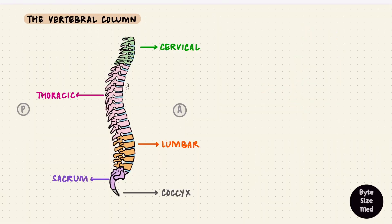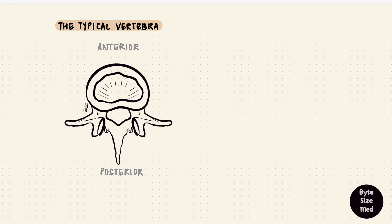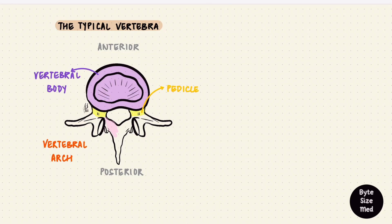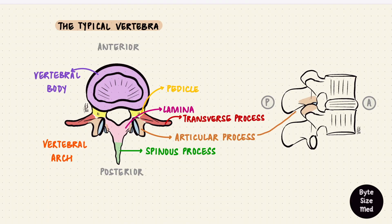All these vertebrae have differences in their appearances, and I've covered some of the different features in earlier parts of this series. Now for a quick recap of the parts of a typical vertebra. Looking at it from above — anterior at the front, posterior at the back — it has a vertebral body anteriorly and a vertebral arch posteriorly. In between the two is a vertebral foramen. The arch and body are united by pedicles, from which emerge two laminae. At the junction of those two laminae is the spinous process. There are two transverse processes, one on each side, and extending above and below are a pair of superior and a pair of inferior articular processes.